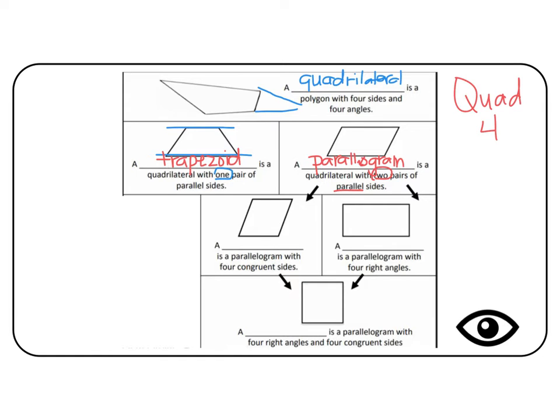Now getting even more specific than that, we go from just the sides to the parallel sides to the angles. On the next row, we have two shapes that are similar to each other, but one has right angles and one doesn't. The one on the left side has congruent sides, which remember means all the sides are equal, but it does not have any right angles. We call this shape a rhombus.